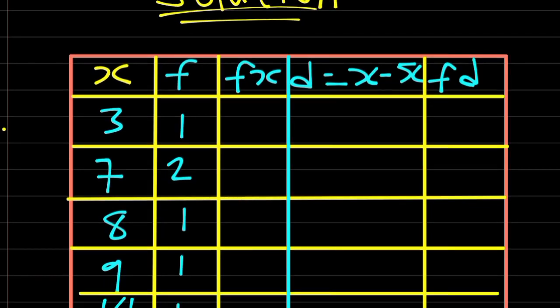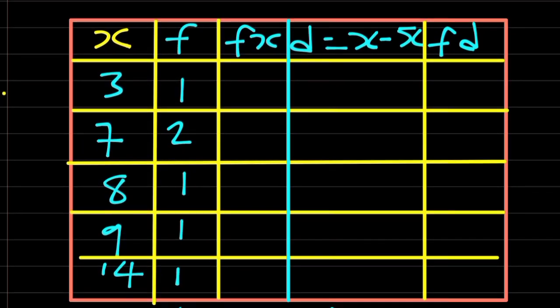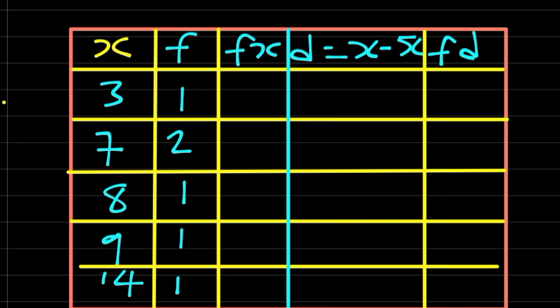Solution, your table is supposed to be like this anytime you are calculating mean deviation. You have the x column, this is our x column. And the frequency column, that is the number of times each of your data appears. f of x, the product of f and your x. And then the deviation will be x minus the mean. You have to calculate the mean before you can get your deviation. And then the product of frequency and the deviation.